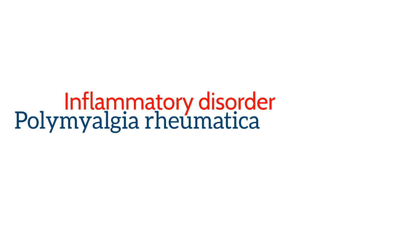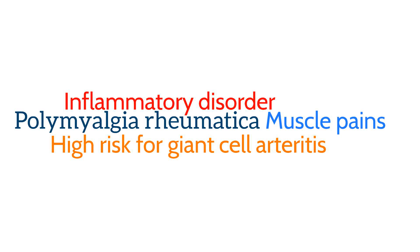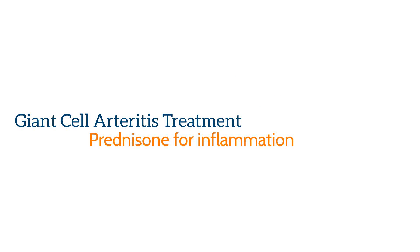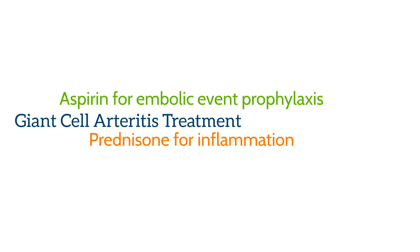There is a strong relationship between developing temporal arteritis and having polymyalgia rheumatica. Polymyalgia rheumatica is an inflammatory disorder that causes muscle pains in the neck, shoulders, arms, and hips. All patients with polymyalgia rheumatica should be questioned for symptoms indicative of giant cell arteritis given their higher risk. In addition to steroids, these patients should also be given a low-dose aspirin every day, which can help prevent embolic events associated with arterial inflammation.